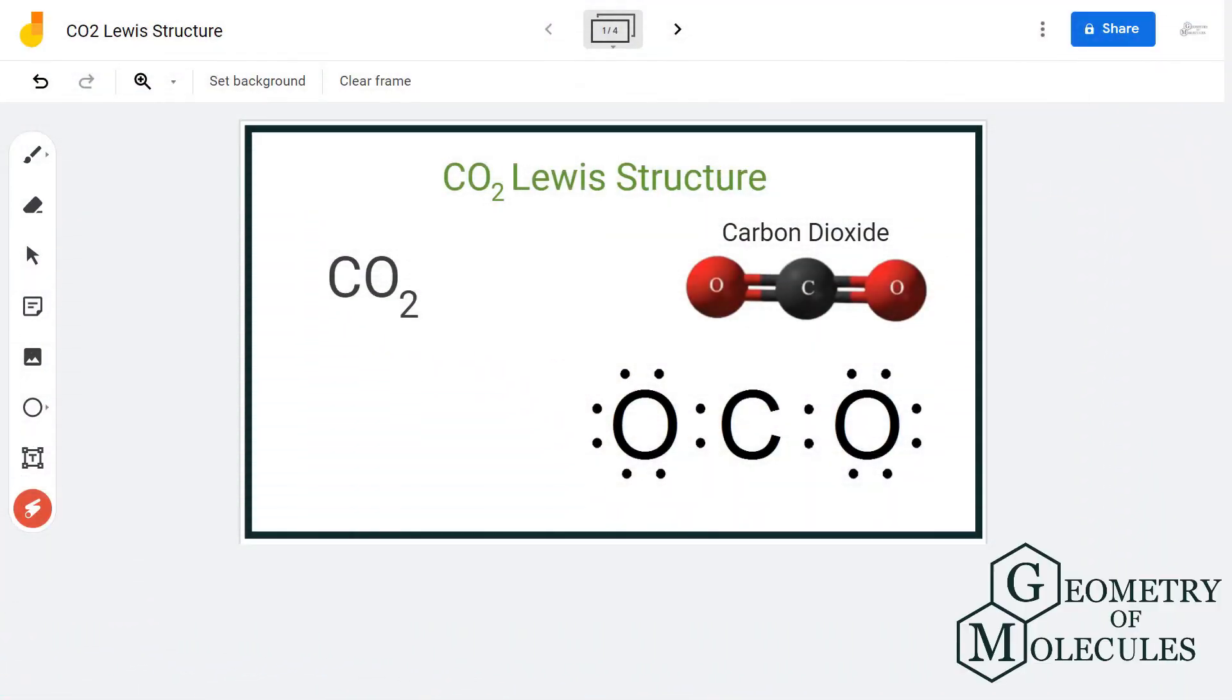Hi guys, in this video we are going to look at the Lewis structure of carbon dioxide. It has a chemical formula of CO2 and is made up of two types of atoms: carbon and oxygen.